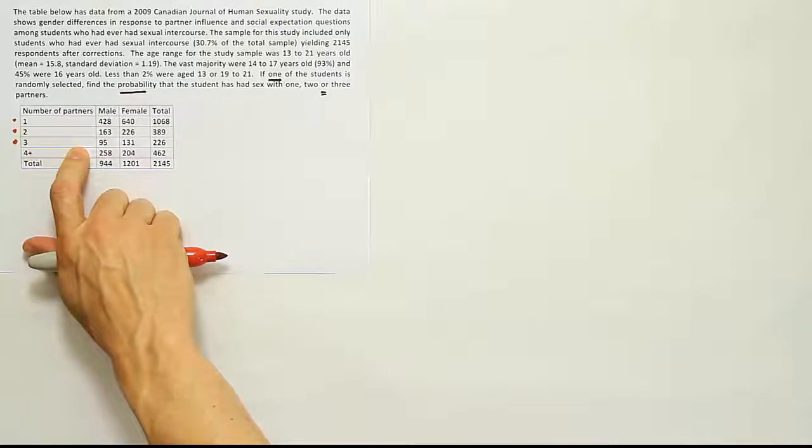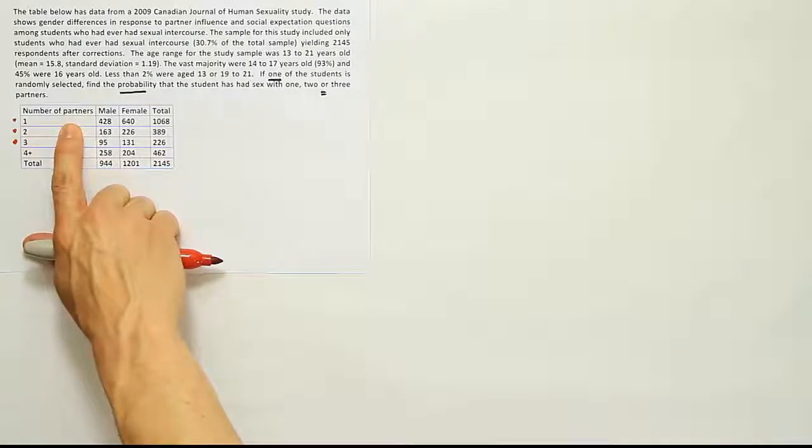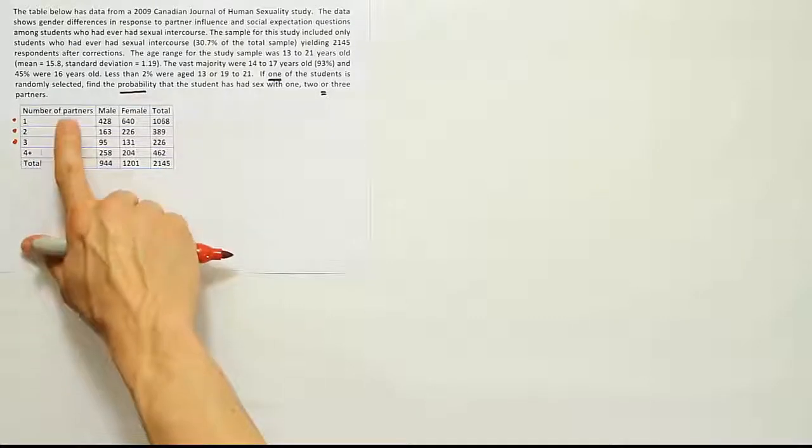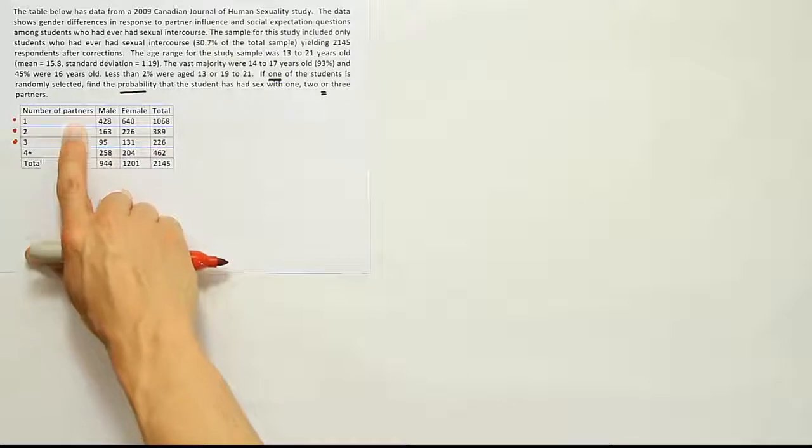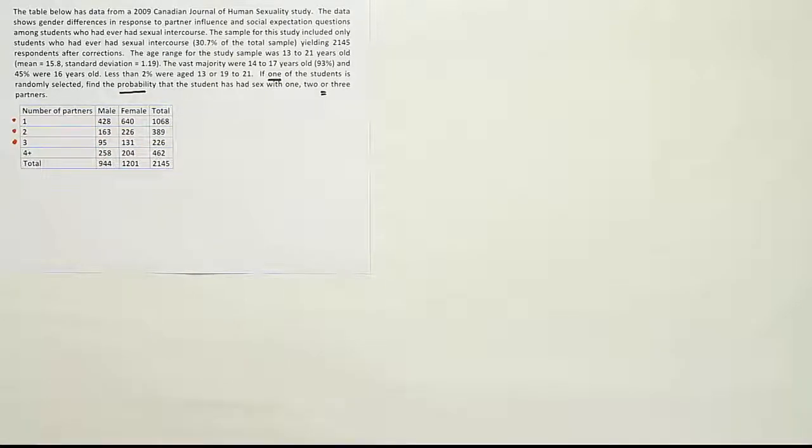Obviously, if you've had sex with three people in your past, you can't say that you've only had sex with one person in your past. So clearly these categories are mutually exclusive. They do not overlap, and so we can do the simpler form of the addition rule.